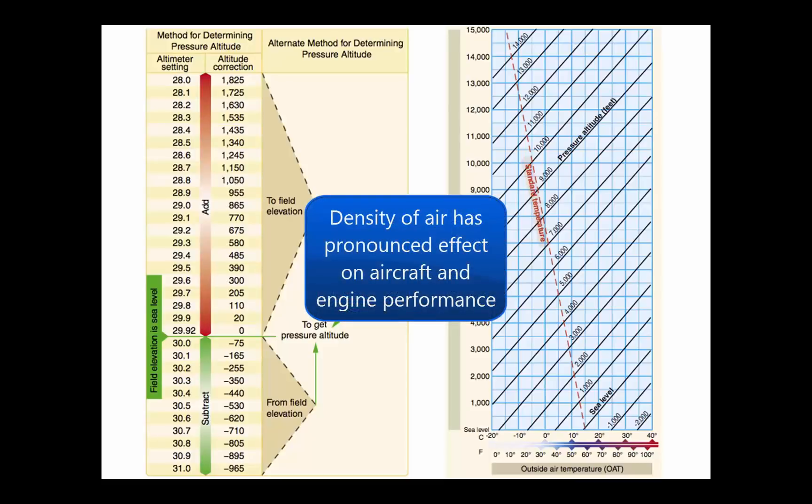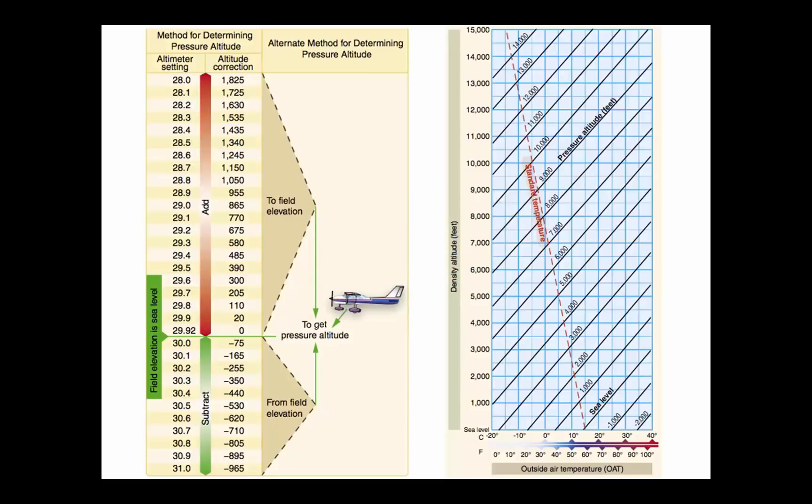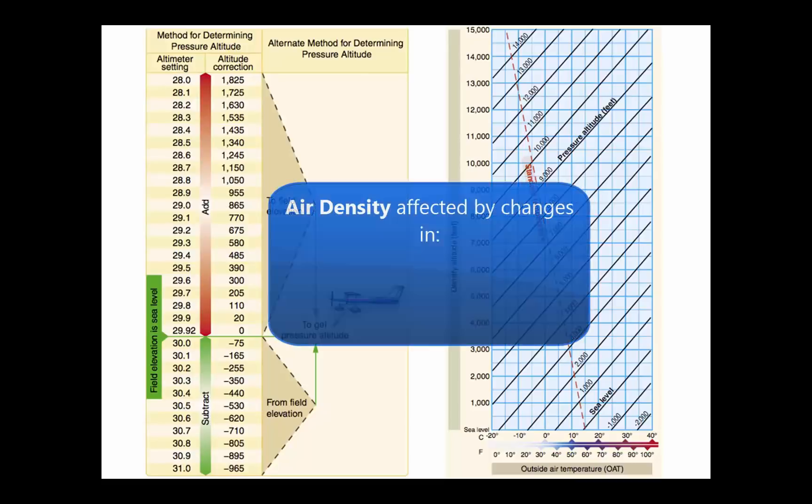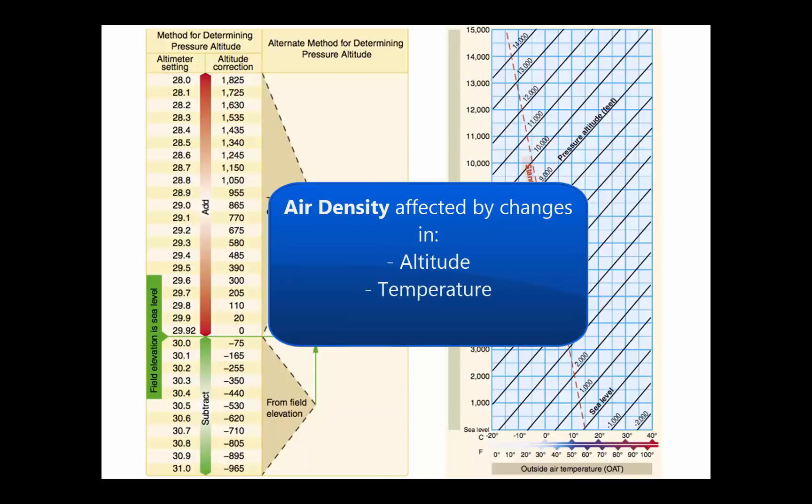The density of the air has a pronounced effect on aircraft and engine performance. Regardless of the actual altitude at which the aircraft is operating, it will perform as though it were operating at an altitude equal to the existing density altitude. Air density is affected by changes in altitude, temperature, and humidity.